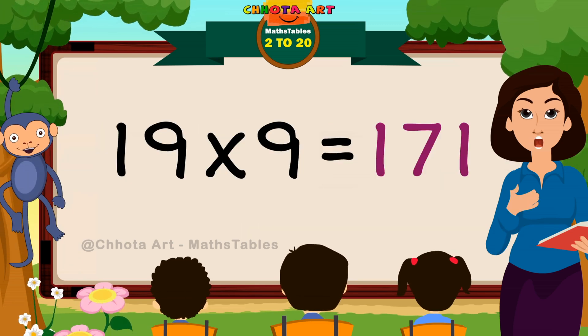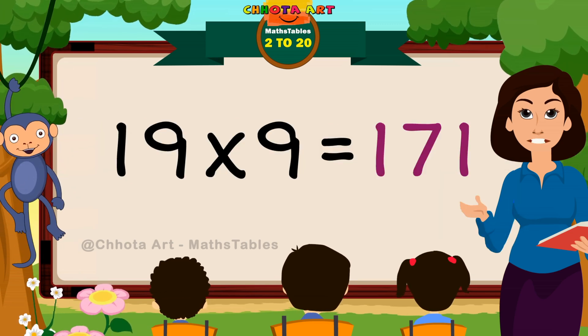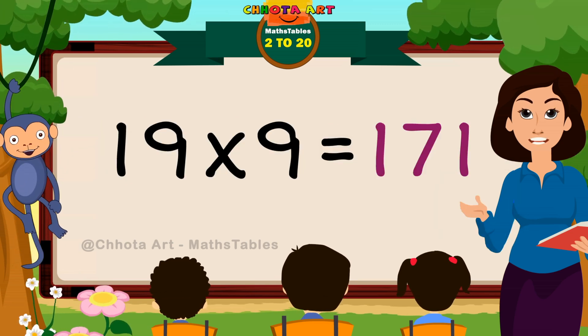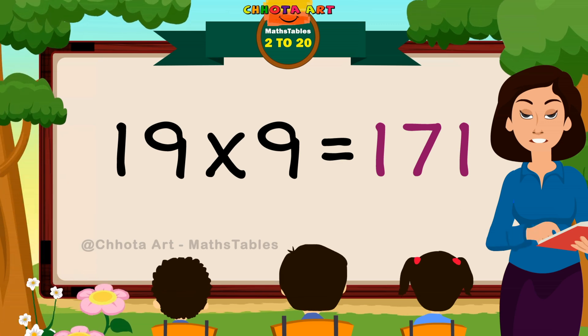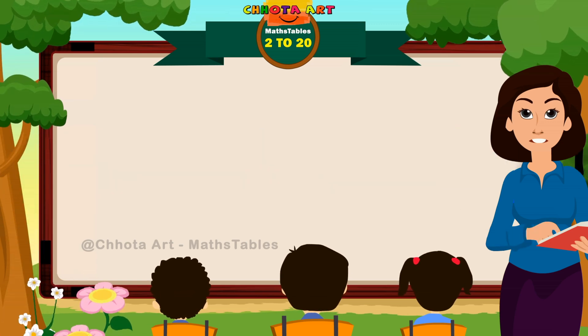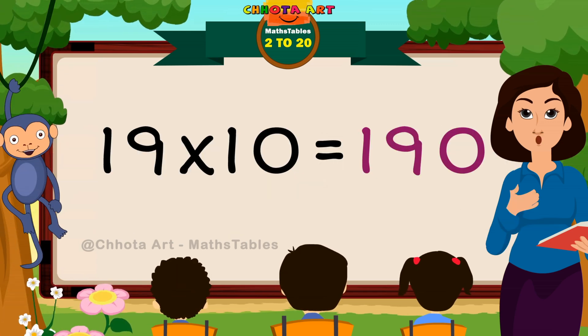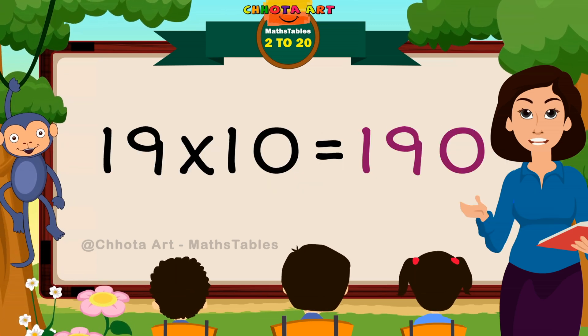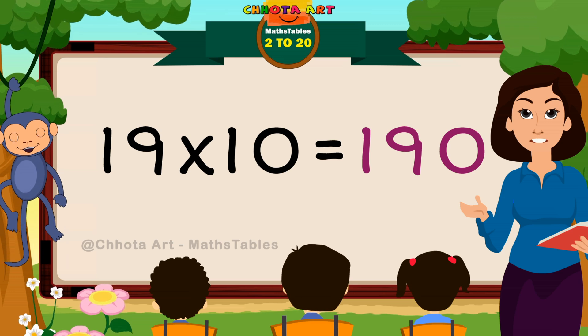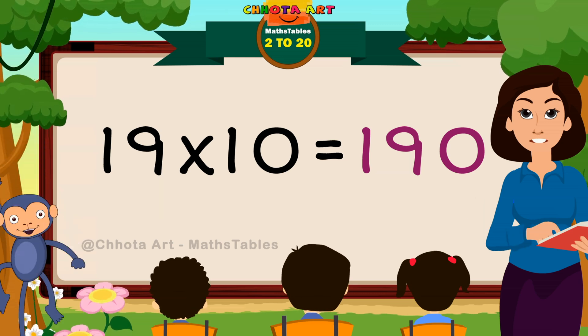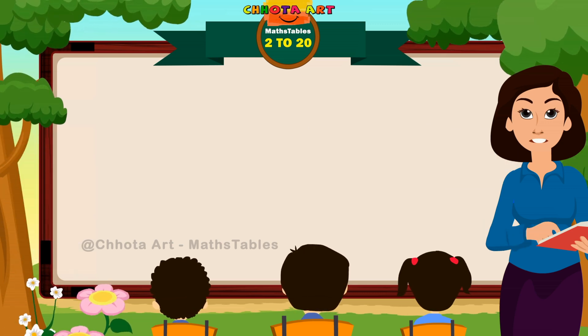Nineteen nines are hundred and seventy one. Nineteen tens are hundred and ninety.